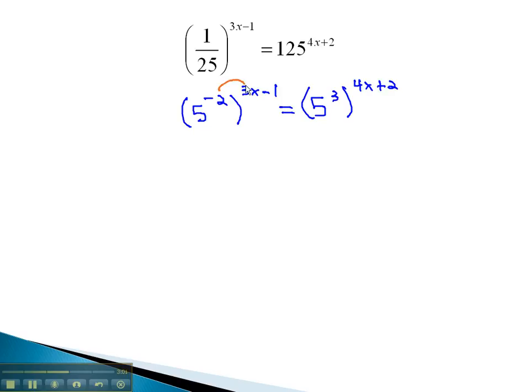Now, as we start combining, the exponents we'll have to distribute onto each term. This gives us 5 to the negative 6x plus 2 equals 5 to the 12x plus 6.